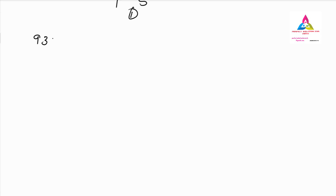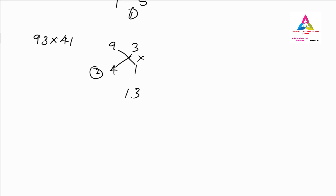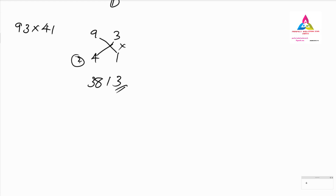Let's take one last example that you can also try at home: 93 into 41. Write 93 and 41 one below the other. 3 ones are 3. Cross-multiply: 9 ones are 9, 4 threes are 12; 9 plus 12 is 21. Write 1, carry 2. 9 fours are 36 plus carry 2 gives 38. So the answer is 3813. Using this method, you can multiply any two-digit number with any other two-digit number, and also find the square of a two-digit number.